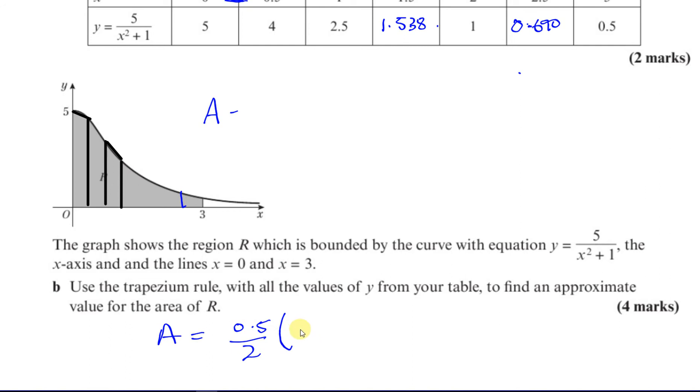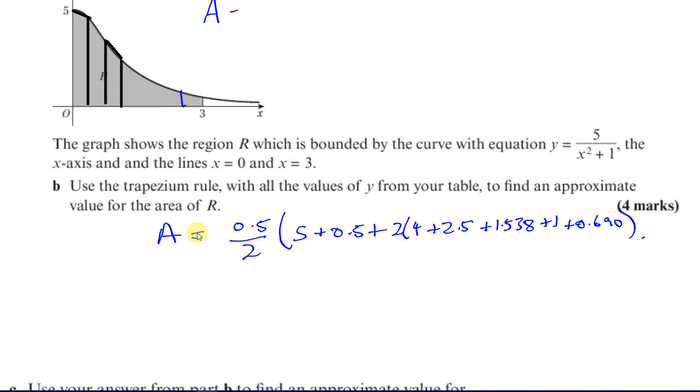So I'm going to have 5, which is the first, added to 0.5, which is the last, and added to 2 times the sum of the others. So it's 2 times 4, plus 2.5, plus 1.538, plus 1, plus 0.690, and that will give me an approximation of the area, so that's proximal area.